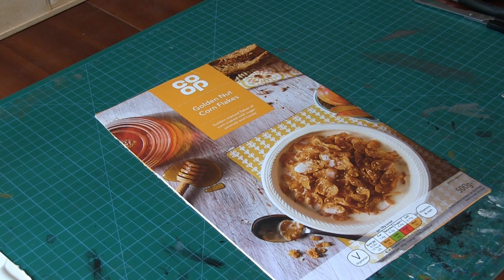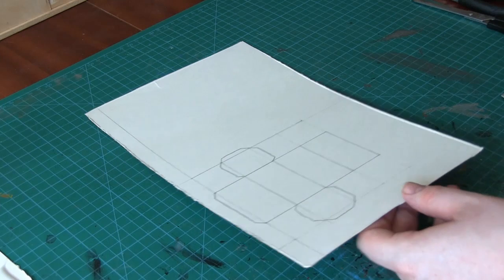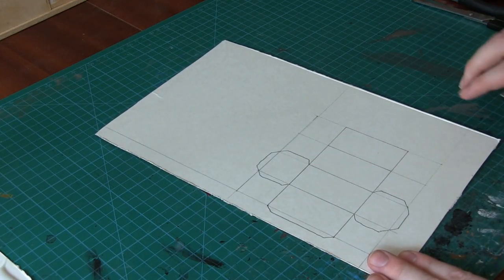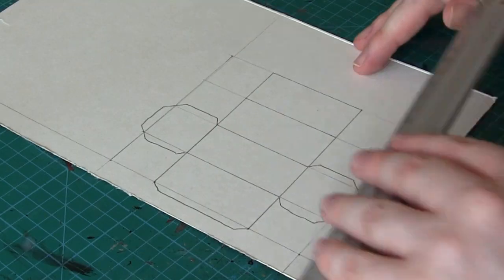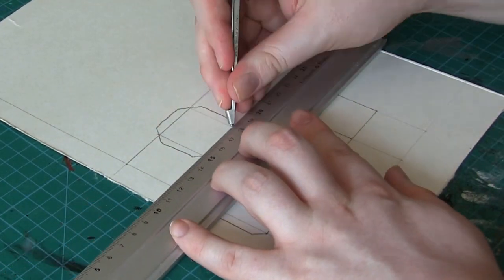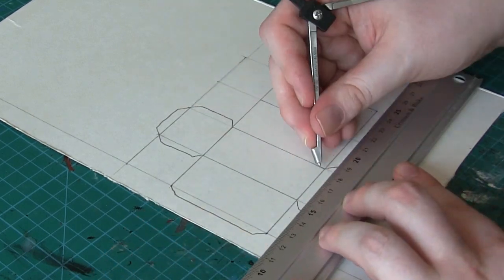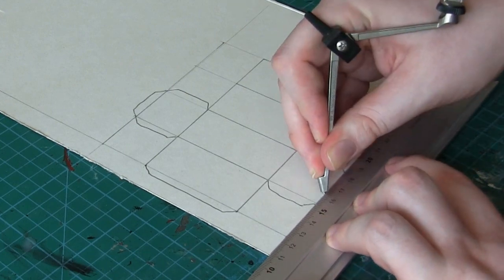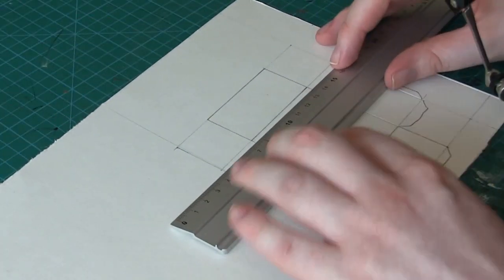First things first, you need some cardboard. I'm using an old cereal box. You need to make the shape of the main body of your robot. With Nuts 2, it's a very simple shape, a cuboid. Once you're happy with your measurements, you can go over the folding lines with a compass. This makes it easier to fold. When you're doing this, don't forget to add in the little flaps so you can glue them together.